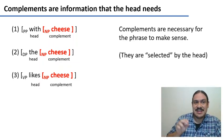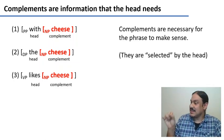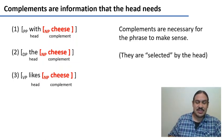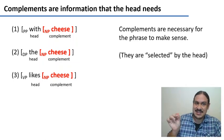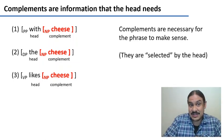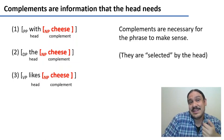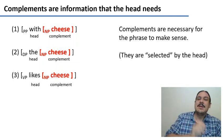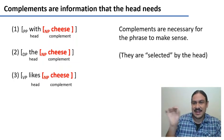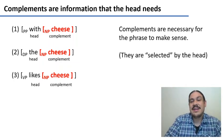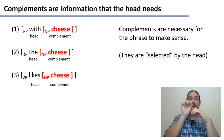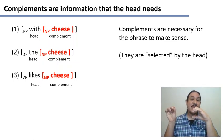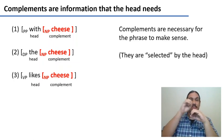For example, if you just say 'with,' it feels incomplete. The word 'with' demands that you have a complement with the additional information — 'with cheese.' If you just say 'the,' it again feels like the phrase is incomplete; you need 'the cheese.' Likewise, if you just say 'likes,' you feel like you need something else — 'cheese.' All these are complements of the head, and in technical terms, they're selected by the head. So there's something in the word 'with' that demands that it be accompanied by a noun phrase or a determiner phrase in order for it to make complete meaning.